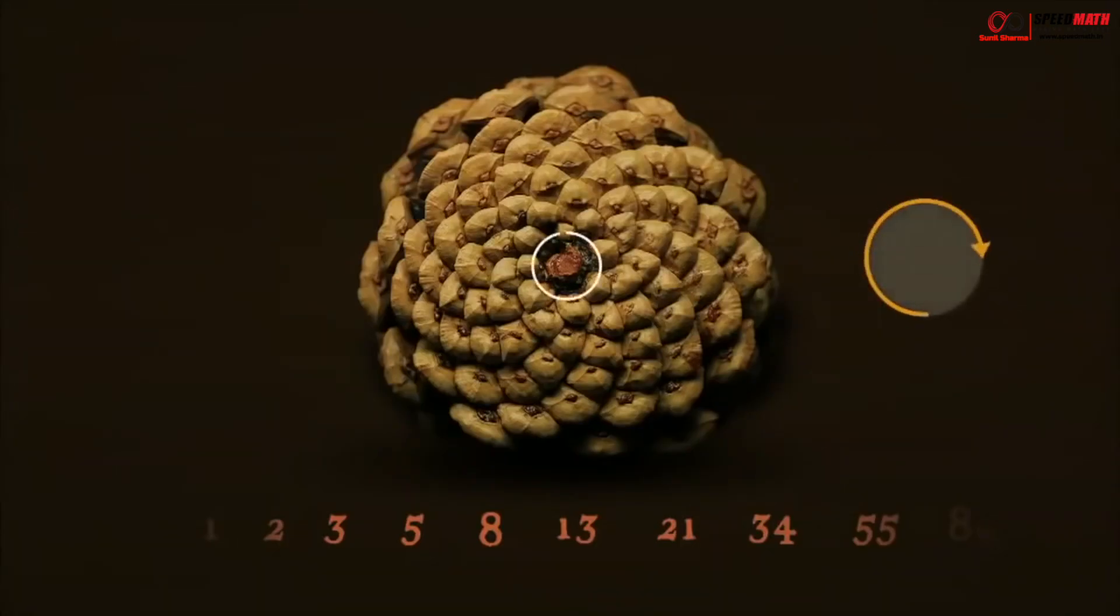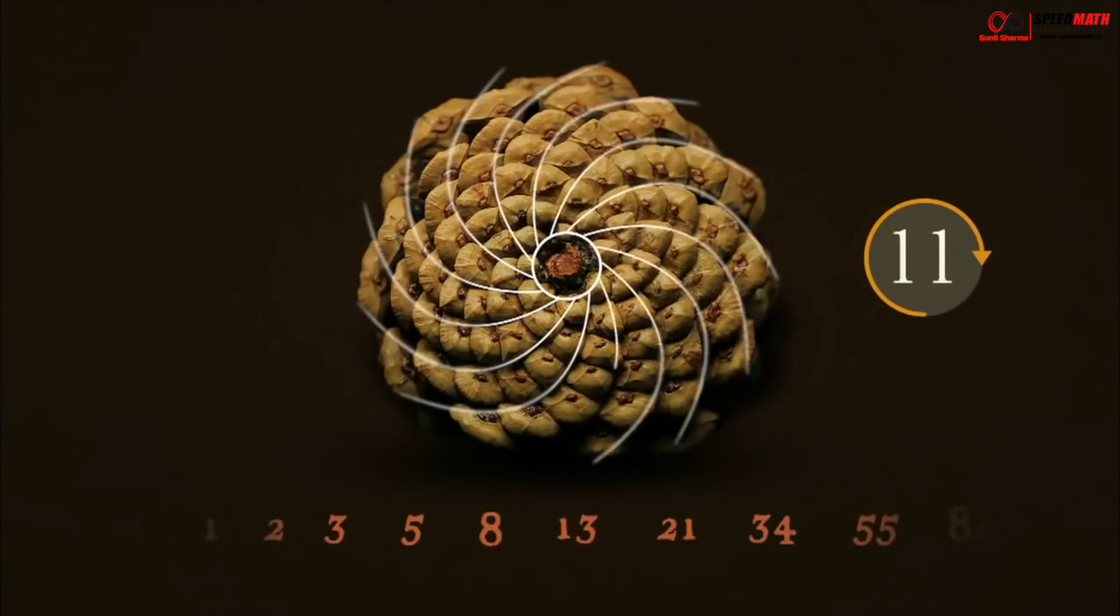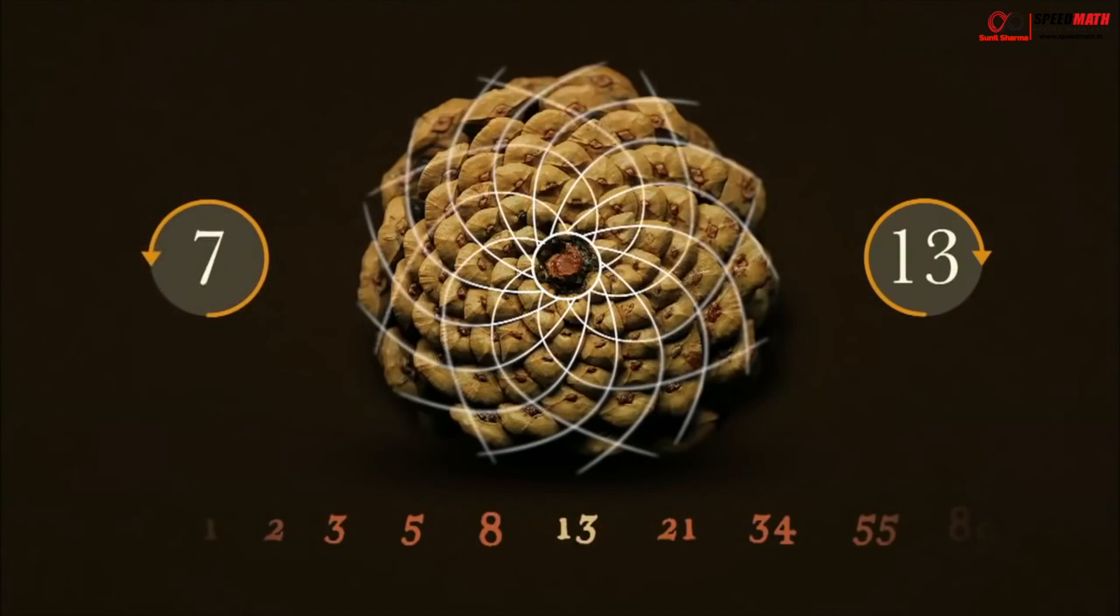If you count the number of spirals in a pine cone in one direction, it gives you a Fibonacci number. And if you count the number of spirals in the other direction, you will again find the adjacent Fibonacci number.